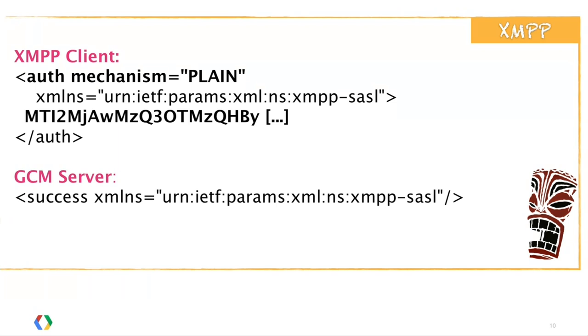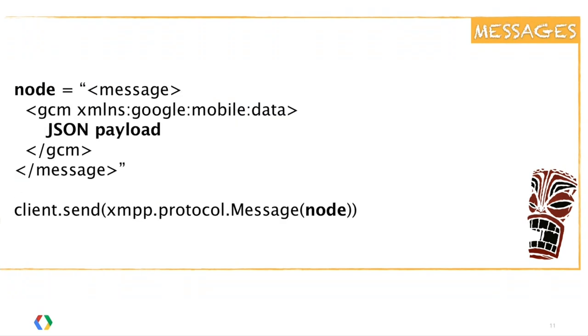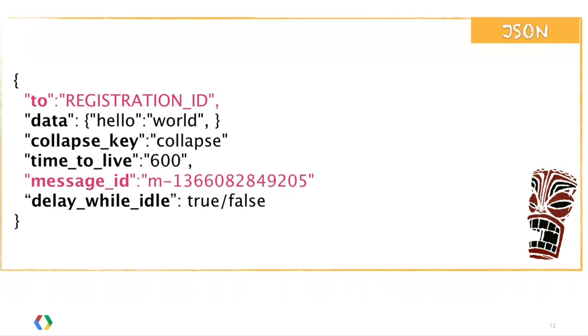For messages, we use the classic XMPP message stanza. The interesting part is the JSON, which should sound familiar — we use the data, the collapse key, the time-to-live, and the delay-while-idle. The only two differences are: the 'to' field, which replaces the old registration IDs field (the value is still a registration ID), and the message identifier. The message identifier is unique per message, mandatory, and must be set by the third-party server. On the HTTP interface — a synchronous protocol — you send a message and get back a response. For XMPP, this is streaming and completely asynchronous, so we give you back acknowledgements using this identifier to match messages.